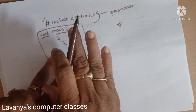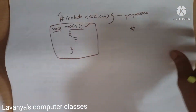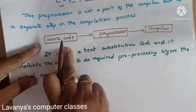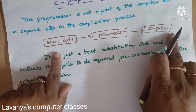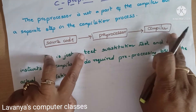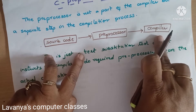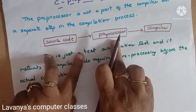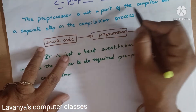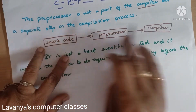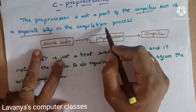A line starting with the hash symbol is handled by the compiler differently. The actual compiler converts C language source code into object code. But before compilation, we need one thing — that is called as the Pre-Processor. The Pre-Processor is not a part of the compiler, but it is a separate step in the compilation process.